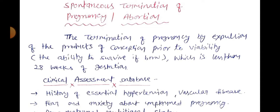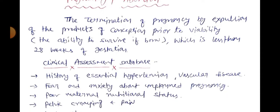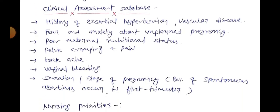For spontaneous termination of pregnancy, the clinical assessment database for making nursing diagnoses includes: osteopenia, hypertension, vascular disease, fear and anxiety about unplanned pregnancy, poor maternal nutrition status, pelvic cramping and pain, backache, vaginal bleeding, duration and stage of pregnancy. Notably, 80% of spontaneous abortions occur in the first trimester.